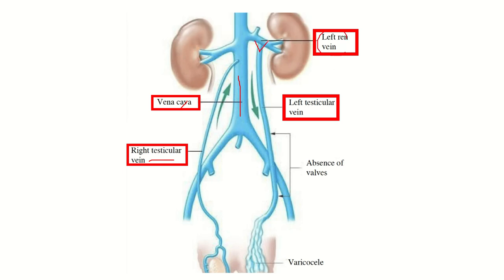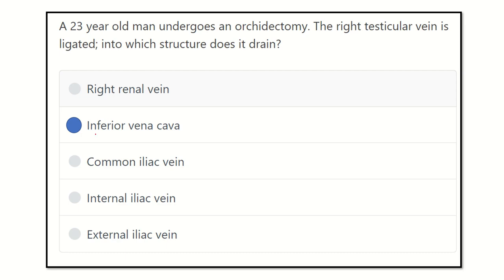This is the key difference in venous drainage of the testes: the right testis drains into the inferior vena cava, but the left testis drains into the left renal vein. So our final answer is the inferior vena cava — the right testicular vein drains into the inferior vena cava, while the left testicular vein drains into the left renal vein. Thank you all.